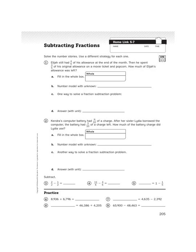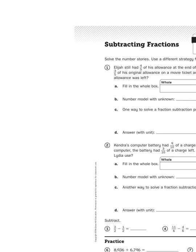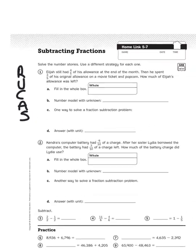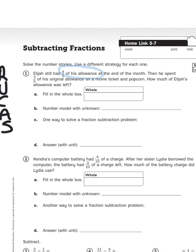It says here that Elijah still had four-fifths of his allowance at the end of the month. Then he spent three-fifths of his original allowance on a movie ticket and popcorn. How much of Elijah's allowance was left? But before we get started, we need to come up with a strategy for solving this problem.